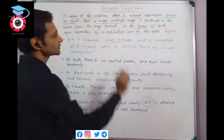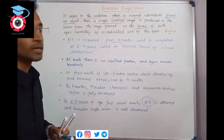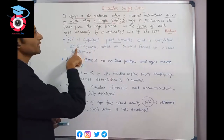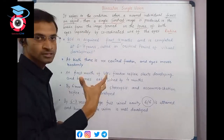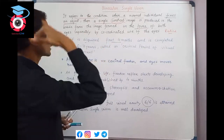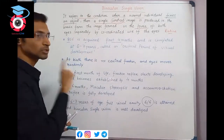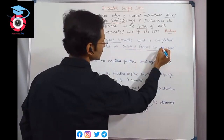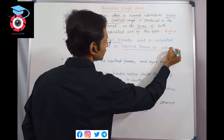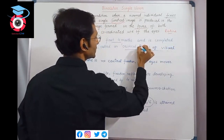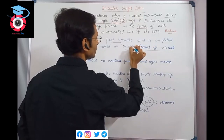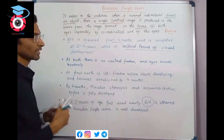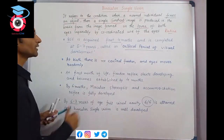Binocular single vision is acquired starting at first 4 months, and develops before 4 months. It is a developing process - it starts at 4 months and is finally completed at 6 to 7 years of age. This is the critical period of visual development.